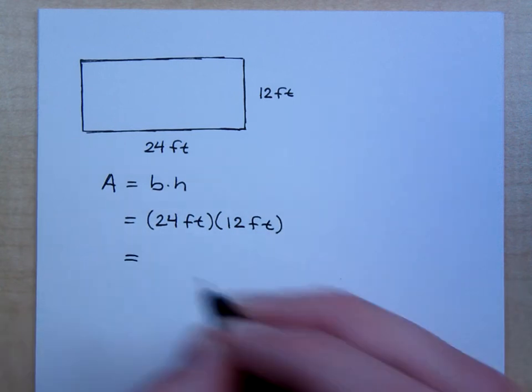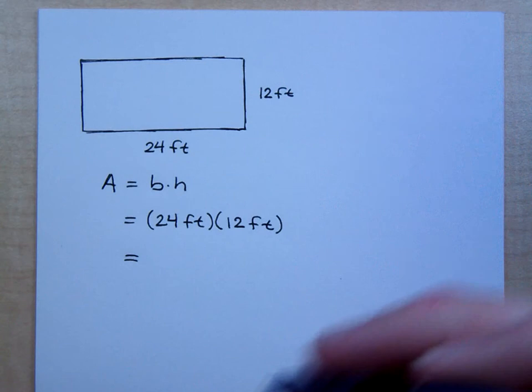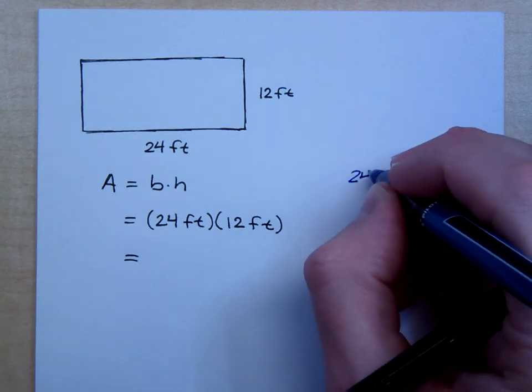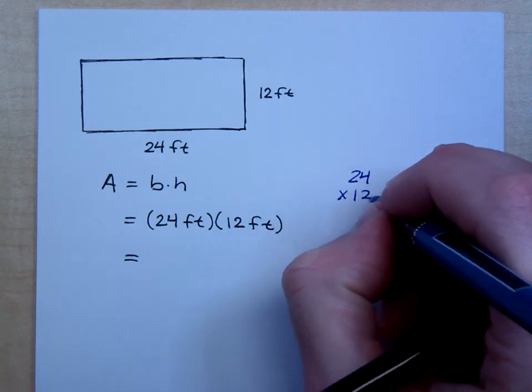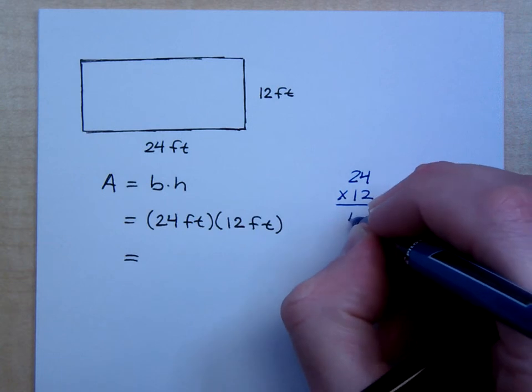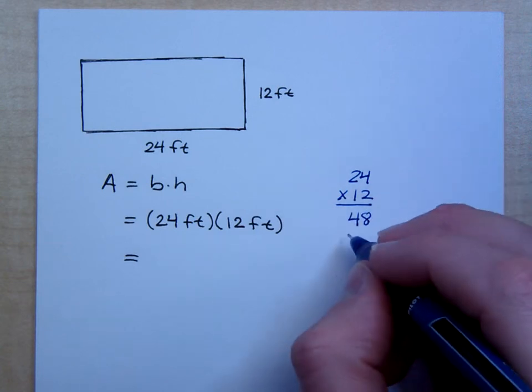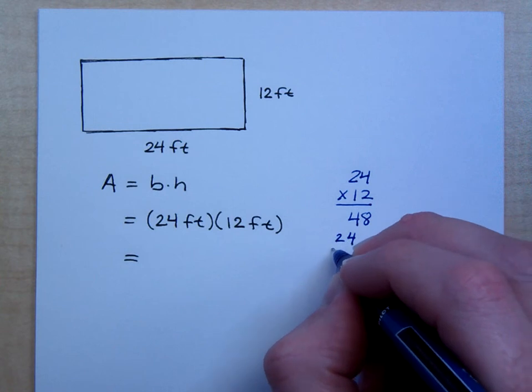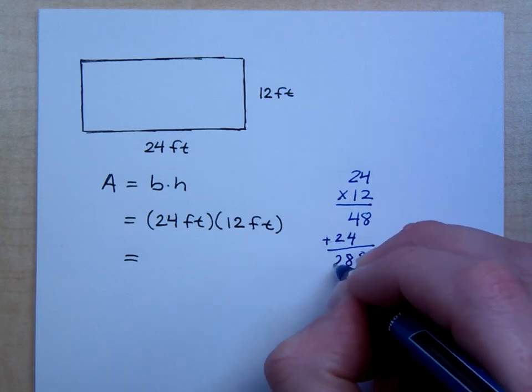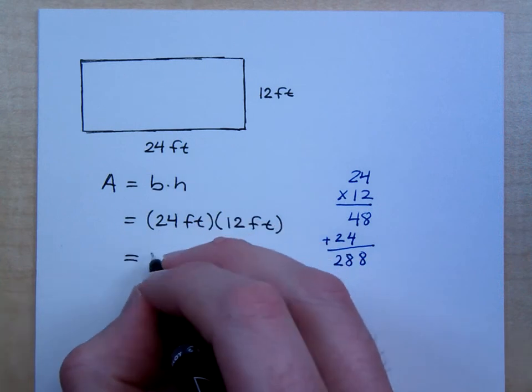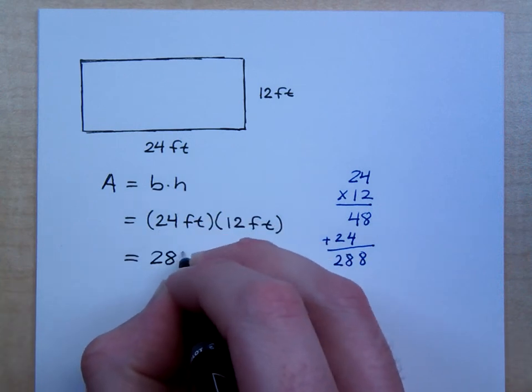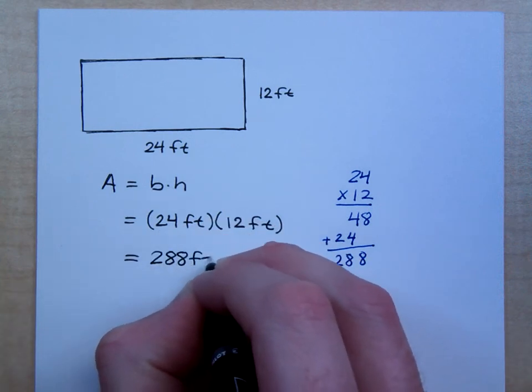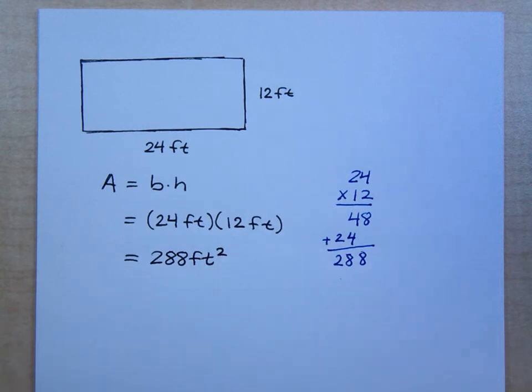When I multiply these guys together, have no shame in the game, just come over here to the side and multiply. 24 times 12, 2 times 24 is 48, 1 times 24 is 24. Make sure you scoot that over. And you come up with 288. So this is 288 square feet, right?